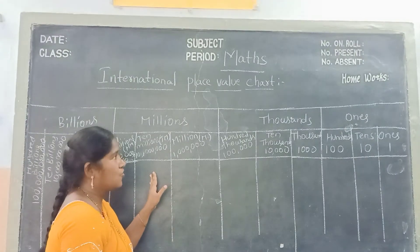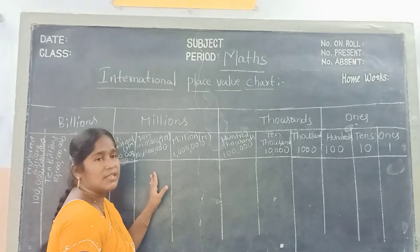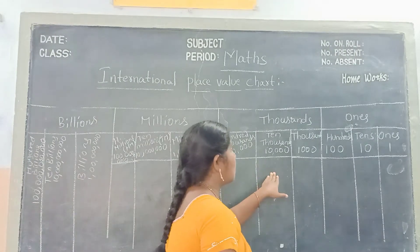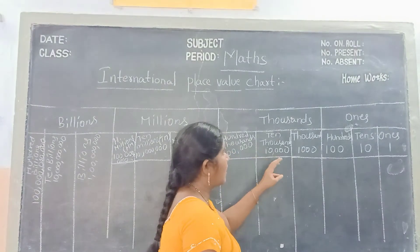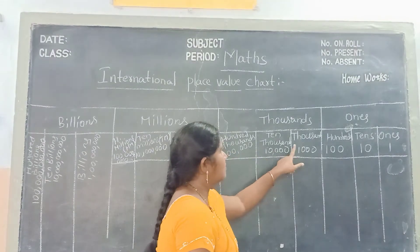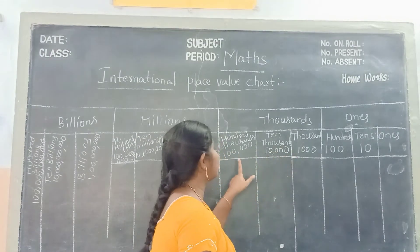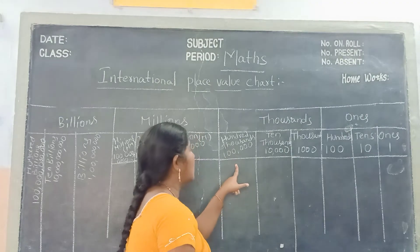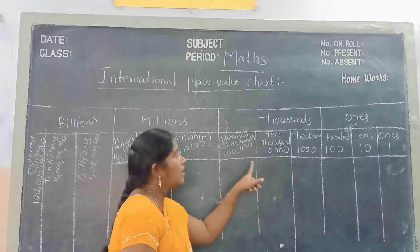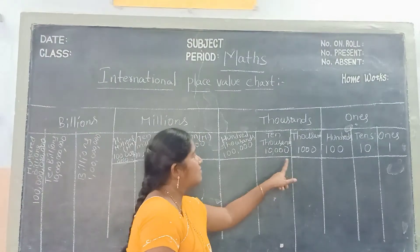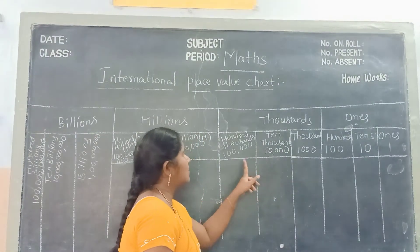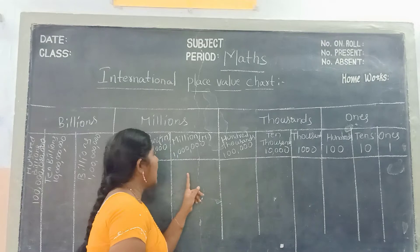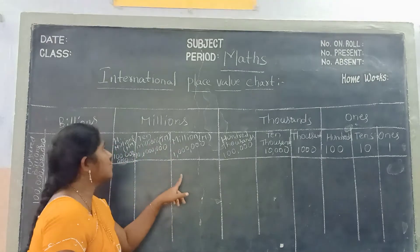Next one goes to the thousands period, children. We have 3 places: thousands, ten-thousands, and hundred-thousands. See children: 1,000s, 10,000s, 100,000s. And next one is millions.